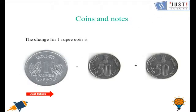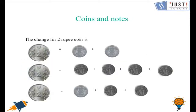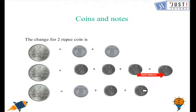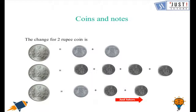Let us look at the coins and change for a 2 rupee coin. For a 2 rupee coin we can have 2 coins of 1 rupee, or 4 coins of 50 paise. Or we can also have 1 coin of 1 rupee and 2 coins of 50 paise, which also makes 2 rupees.